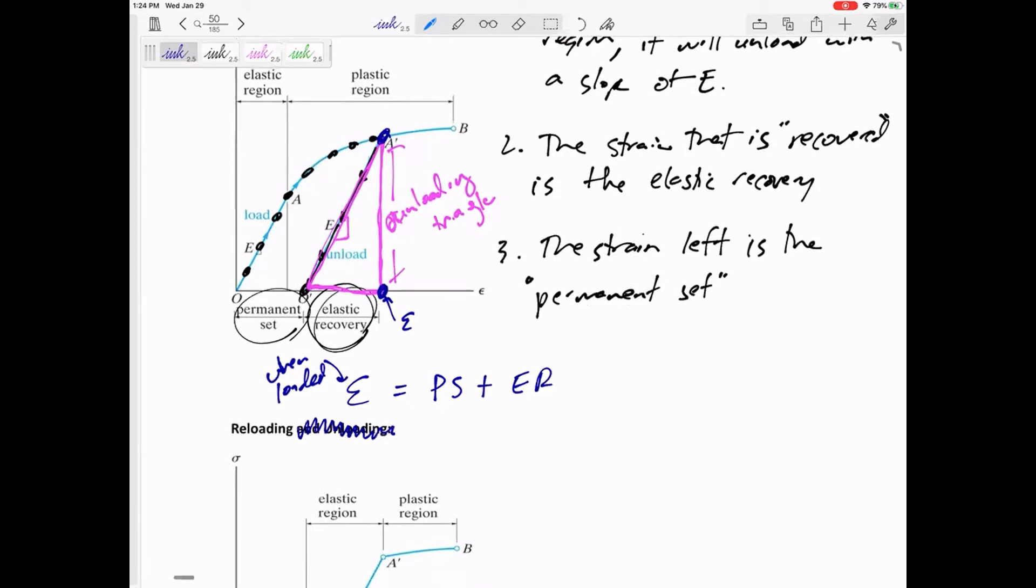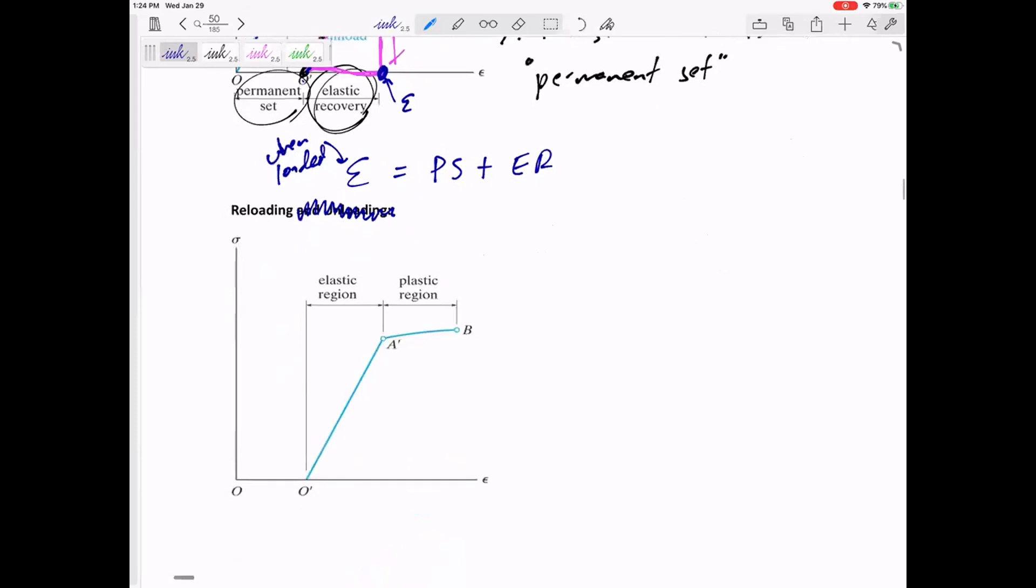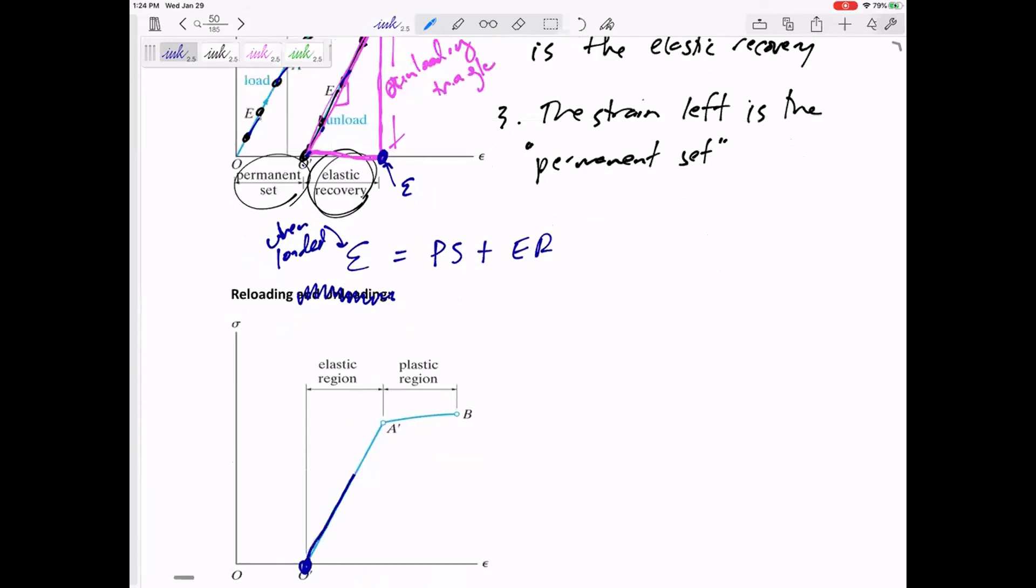If we were to load it up here and unload it, if we were to reload it again, it would be starting at that point right there. And it would load up at a slope of E, and then it would go back and it would hit the old stress-strain curve.